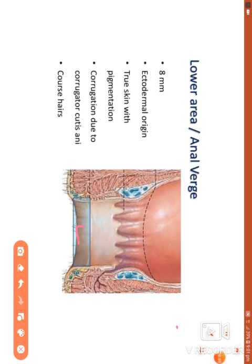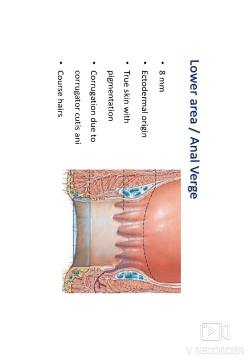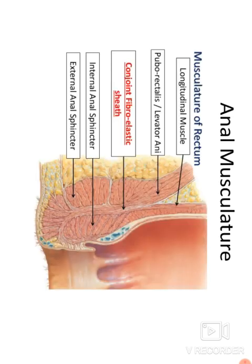In summary, the interior of the anal canal consists of three zones: the upper zone is the mucosal or muscular part, the middle zone is the pecten, and the lower zone is the anal fossa.